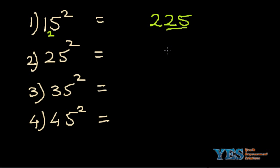Let's try the next one: 25. The last two digits will always be 25. Now to find the next digit, increase this number 2 by 1 to get 3. 3 times 2 gives you 6.